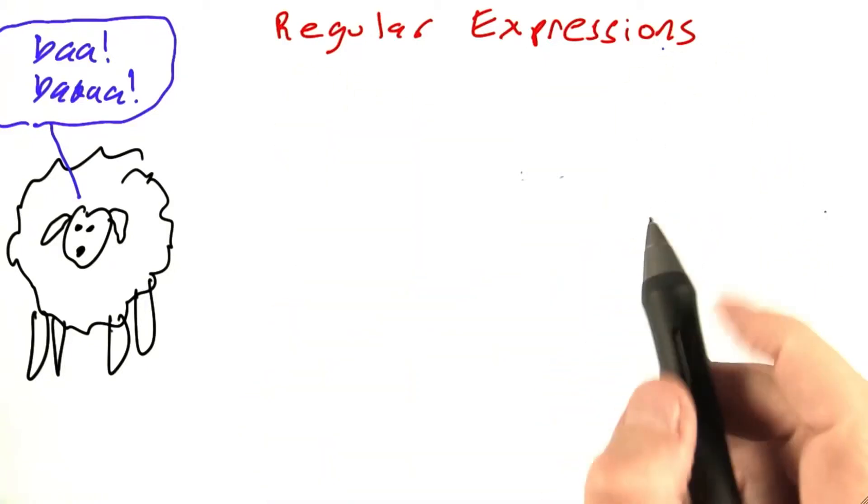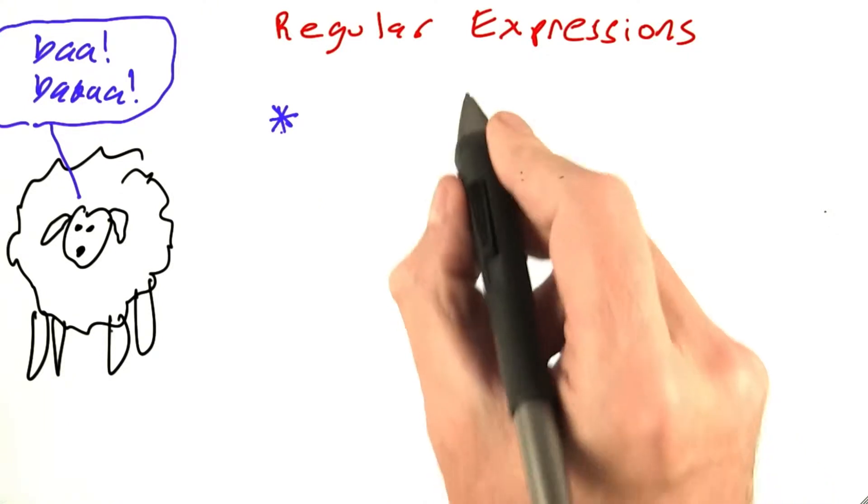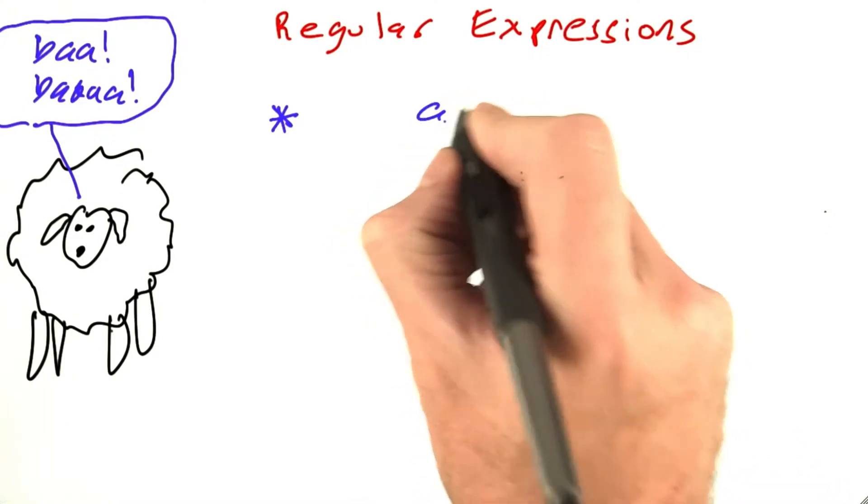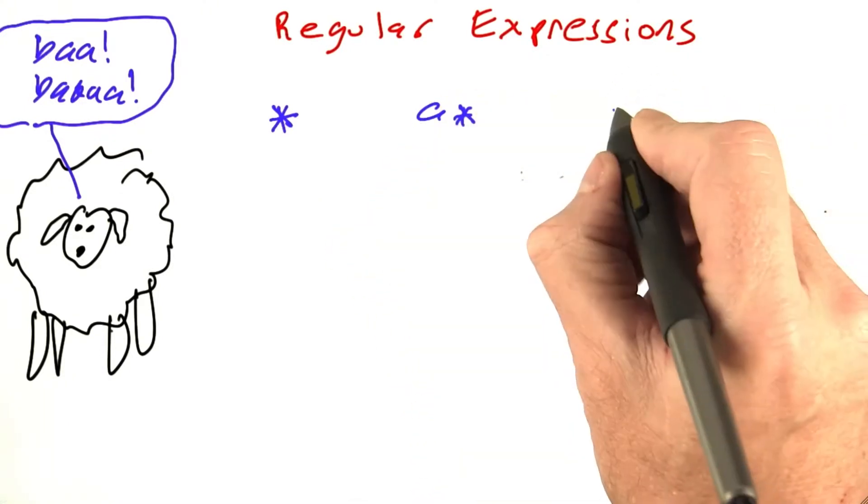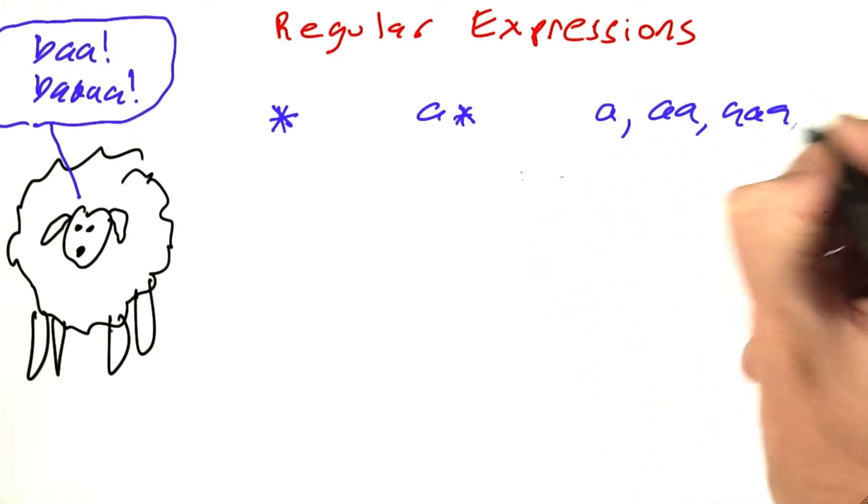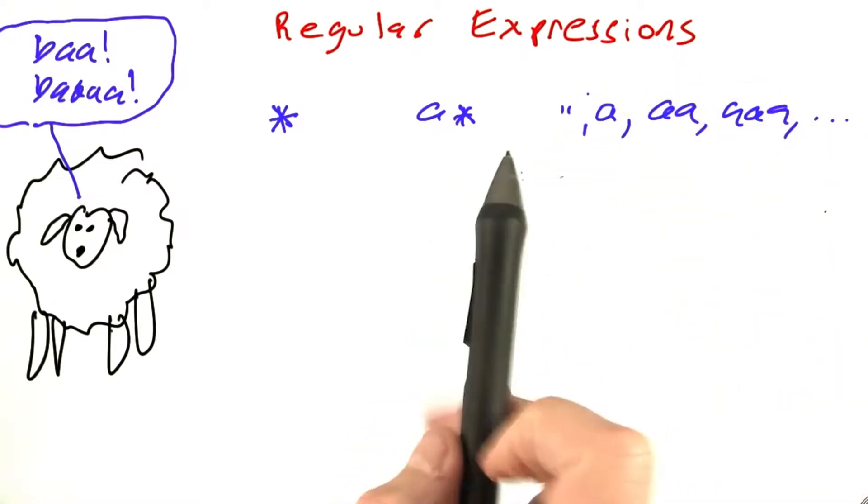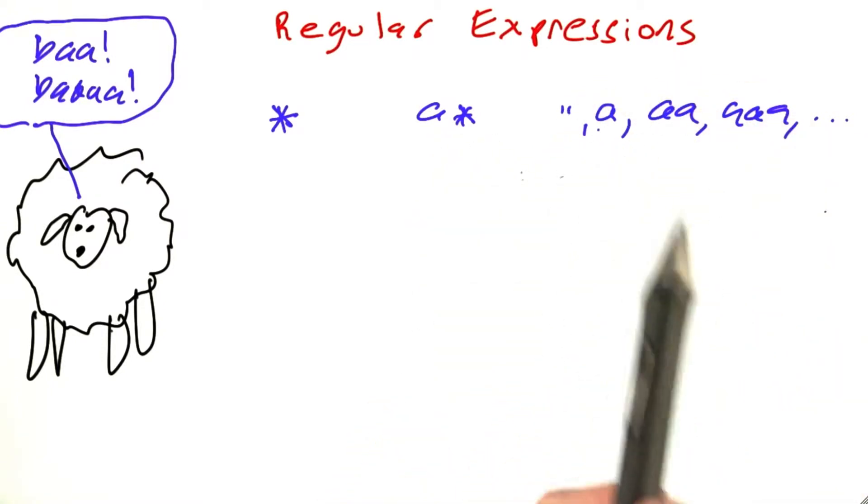So what goes into a regular expression? Well, we saw one example where the star was a special character and where, for example, a* represents a, aa, aaa, and so on, as well as the empty string because it could be zero occurrences of a.